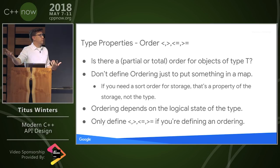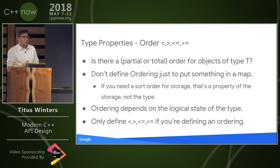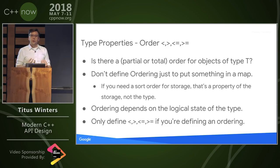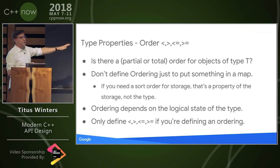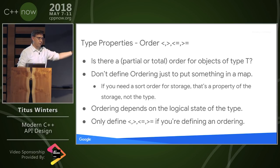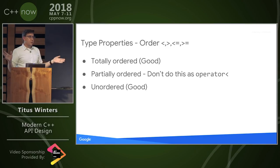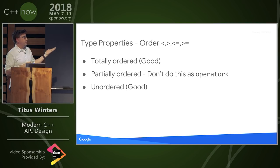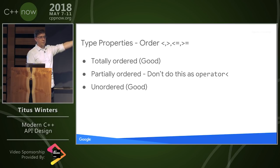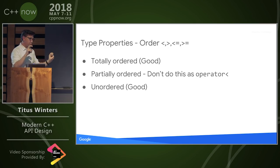Once we talk about comparable, we can talk about ordered. Is there a partial or total order for your type? Please don't define an ordering just to put something in a map. If you need sort order for storage, that is a property of the storage, not a property of the type. You don't define operator less-than on Chair because you want to put Chair in a map — there are many reasonable ways to order a collection of chairs: by height, number of legs, comfortability. Ordering depends on the logical state, not the physical state. Please only define ordering comparison operators if you're actually defining an ordering. Don't build partially ordered types — and if you are, please don't name them operator less-than.